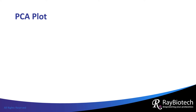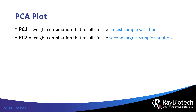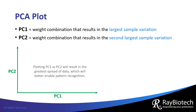Each principal component, or PC, has a different combination of weights on the attributes. By convention, the first PC, or PC1, will have a weight combination that results in the largest spread or variation of data points. PC2 will have a weight combination that results in the second largest spread of data points, and so on. Because of this, PCA data are commonly represented by a plot of PC1 versus PC2, which will result in the greatest spread of data that will better enable pattern recognition.